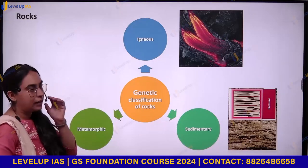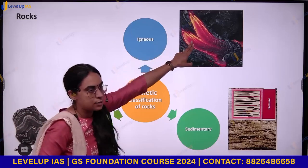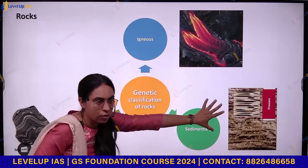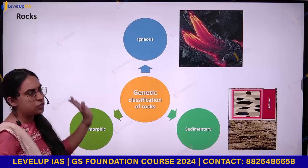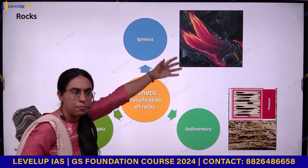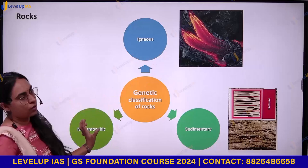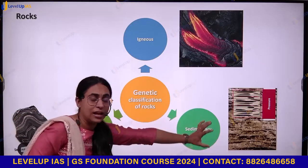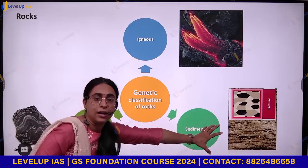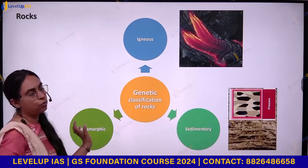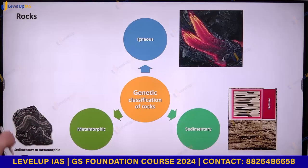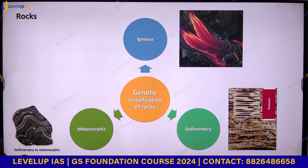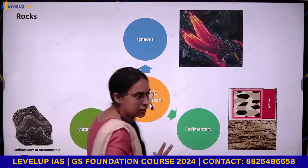It is quite possible that igneous rock as well as sedimentary rock can change and become a new rock under temperature or pressure. Sedimentary rock under extreme temperature and pressure can become a new rock called a metamorphic rock. For example, granite changes into gneiss.